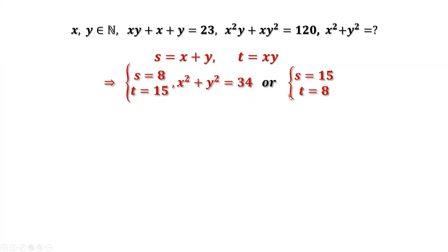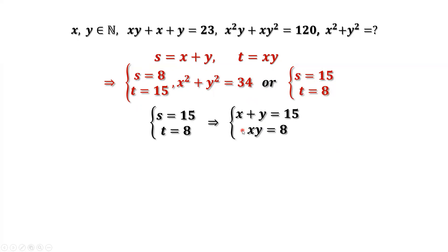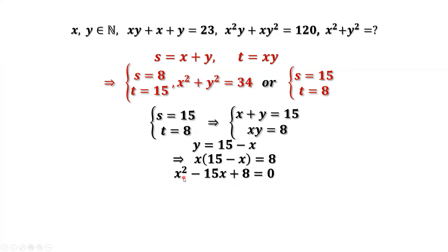We have done the first situation. When s equals 15, t equals 8. Using the definition again: x plus y equals 15, x times y equals 8. From the first equation, y equals 15 minus x. Substituting into the second equation and simplifying gives the quadratic equation x squared minus 15x plus 8 equals 0. Back to the given condition, we need positive integer solutions. Using the quadratic formula, there is no integer solution for this case.